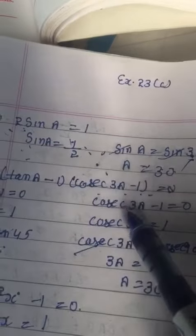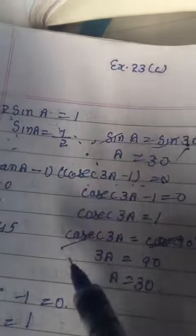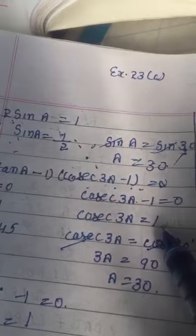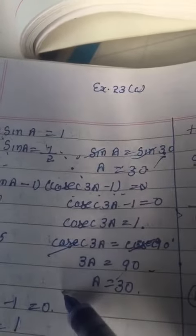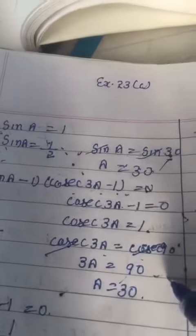Cosec(3A) = 1. When cosecant is equal to 1, cosec 90°. Again, cosecant and cosecant will cancel out, 3A = 90, so A = 30.